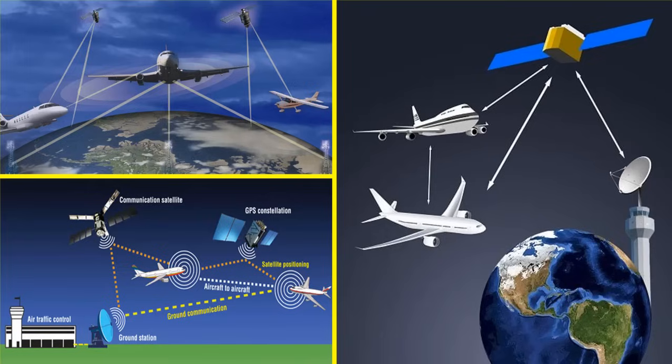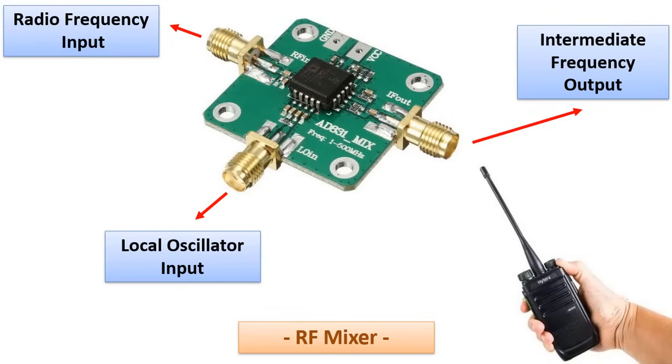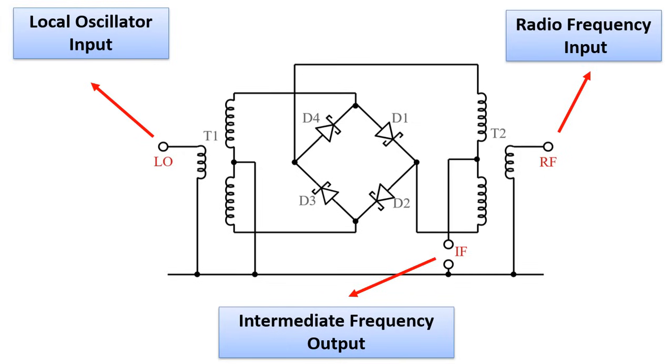An example of one of the places where Schottky diodes are used is RF mixer circuits. Schottky diodes are used in RF mixer circuits used to move the frequency of a signal from one band to another band. When we look at the circuit diagram, we can see that there are four Schottky diodes in the full-wave rectifier structure in this way. Thanks to the RF mixer, the incoming audio signal is encrypted and sent to another receiver at a different frequency value.